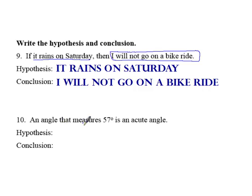An angle that measures 57 degrees is an acute angle. Now notice the words if and then do not appear anywhere in here. So it helps to kind of put them in somewhere where it makes sense grammatically. So you could say something like if an angle has a measurement or if an angle measures 57 degrees, then it is an acute angle.